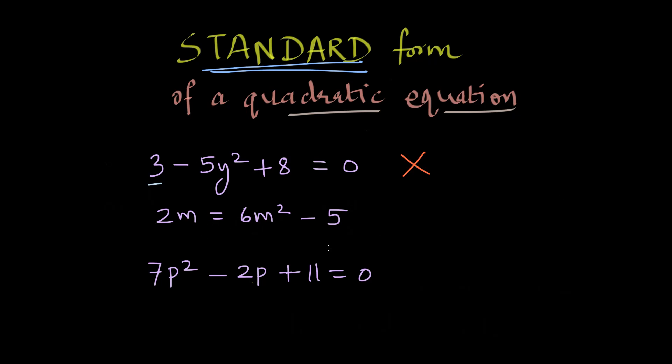Okay, what about the second one? I see 2m = 6m² - 5. Again, it's important for a quadratic equation to be written in a way that one of the sides is 0 and the algebraic expression on one of the sides is written in the descending order of the degree, which is not followed here. Even if we had written 6m² - 5 = 2m, this still wouldn't be in the standard form since one of the sides is not 0.